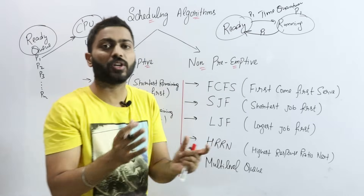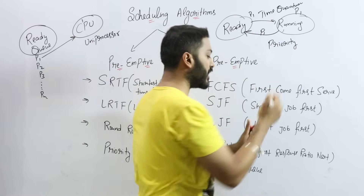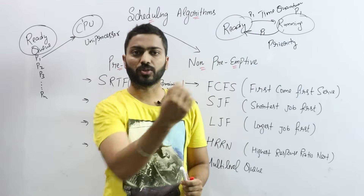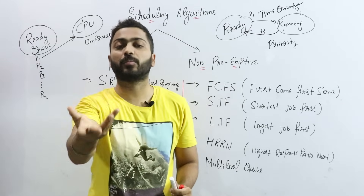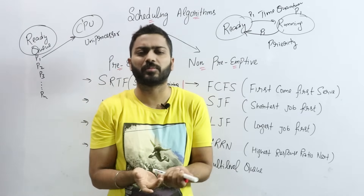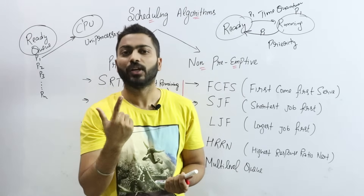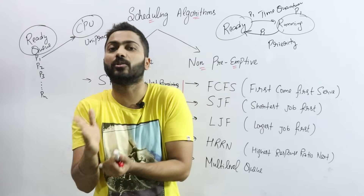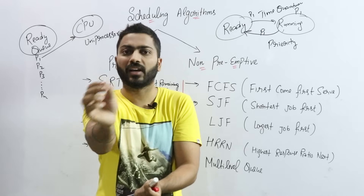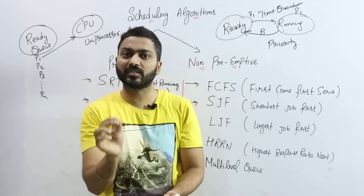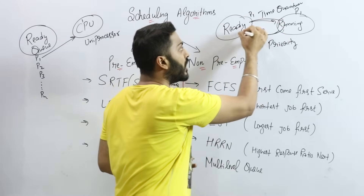Another reason for preemption is priority. For example, if I have students answering questions and a higher-priority student arrives, I give them priority. The current process waits, and I take up the higher-priority task first. This is why we move a running process back into the ready queue — due to priority.